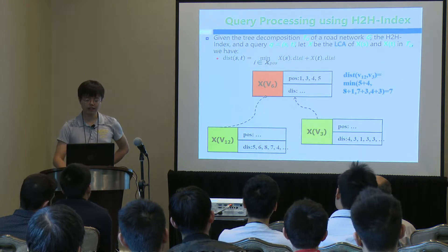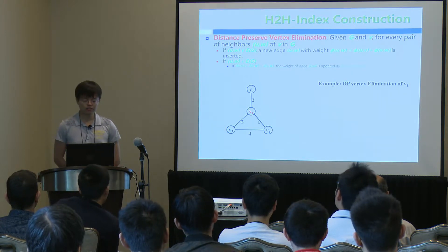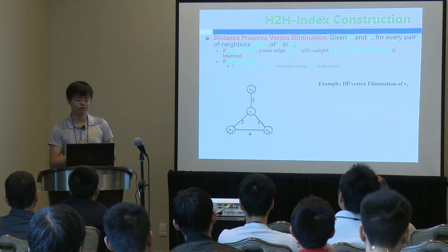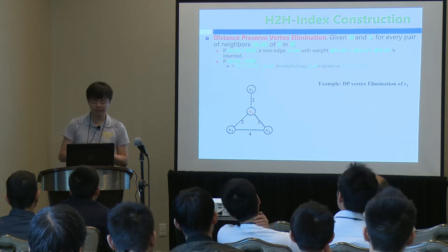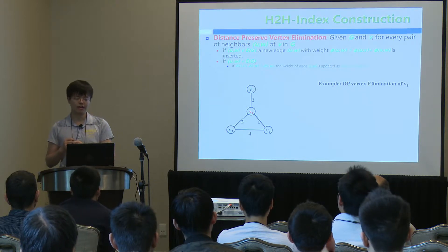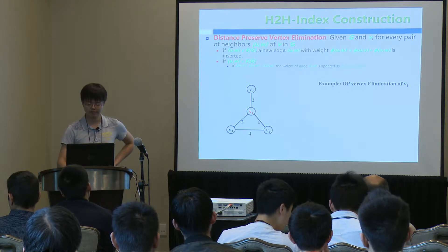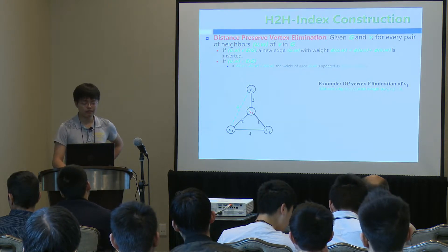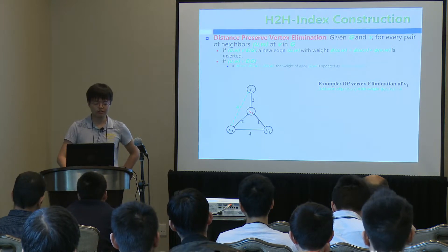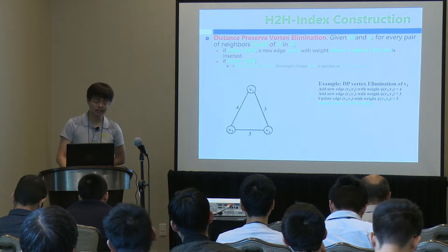I will now explain how to construct the H2H index. First, we transfer the original graph to a tree decomposition. A key operation is distance-preserving vertex elimination — when we delete a vertex, the remaining graph preserves the same distances as before. When we delete V1, we add all edges among V1's neighbors (e.g., V2, V3, V4) and update those edges, then delete V1.